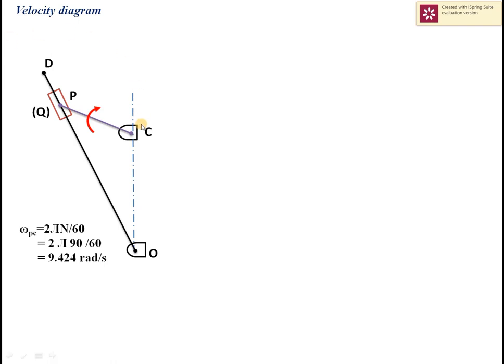For the velocity polygon, we consider one link at a time, starting from fixed link OC. Assuming C rotates about O, its linear tangential velocity VCO equals the radius of rotation OC times its angular velocity. But since OC is a fixed link, its angular velocity is zero, so VCO is zero in magnitude. In the velocity diagram, a zero-length vector is represented by a point, so CO is plotted as a point.